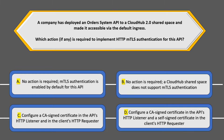Looking at options C and D, both mainly talk about configuring the certificate in the HTTP listener or the client's HTTP requester. One option also mentions using a self-signed certificate. However, the way you configure the HTTP listener or HTTP requester in your code has nothing to do with enabling mutual TLS in CloudHub shared space.